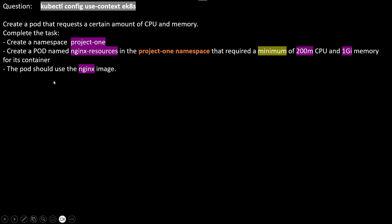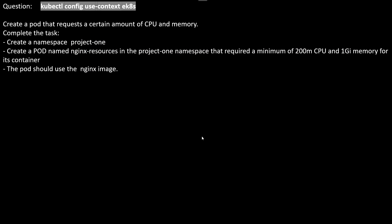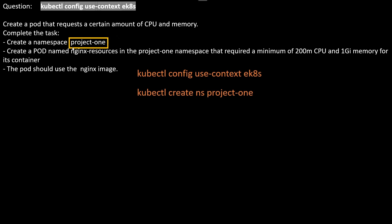The pod should use the nginx image. If we get this type of question in the exam, the very first step is to copy the context command mentioned in the question and paste it in the terminal. After that, we can create the namespace using kubectl create namespace project-1, as mentioned in the question.